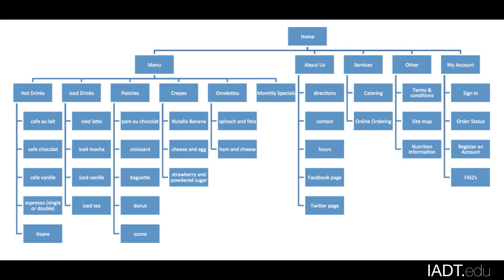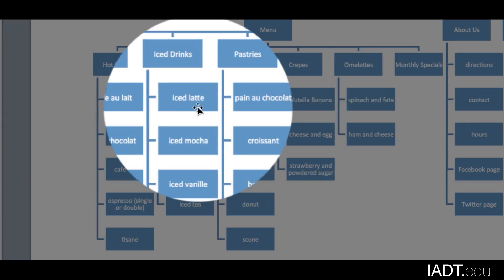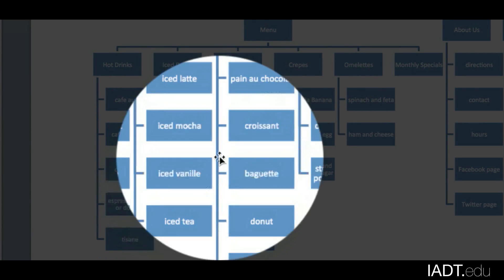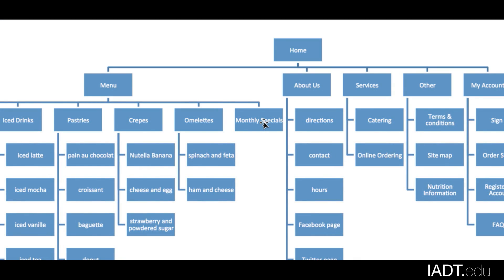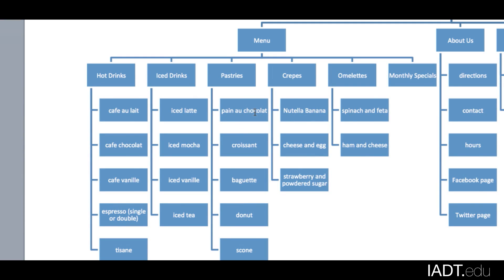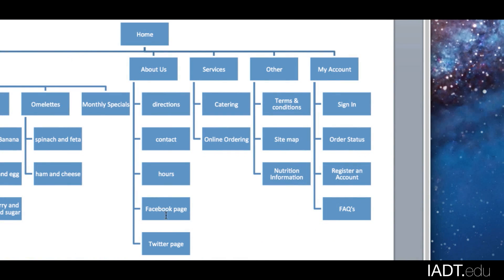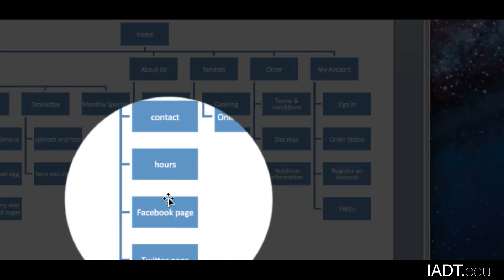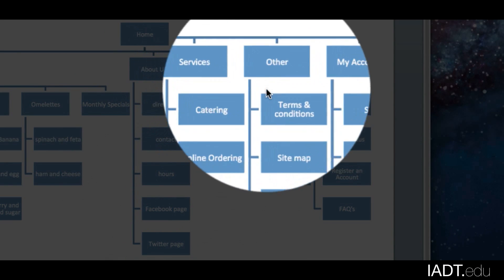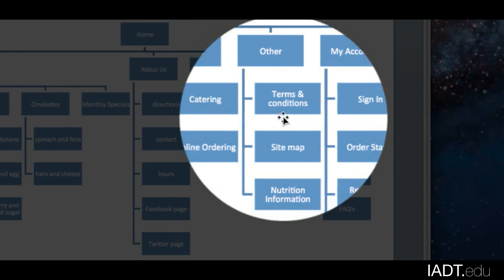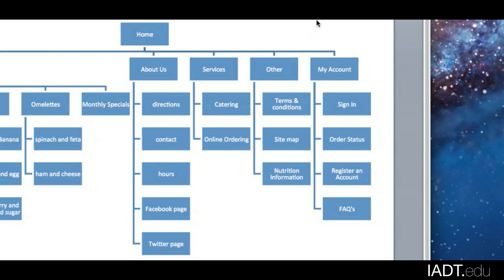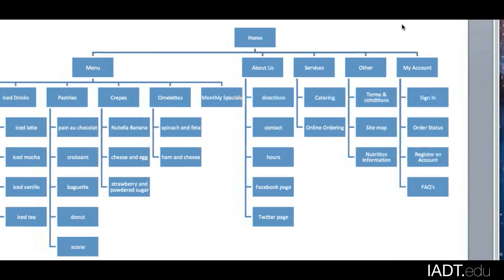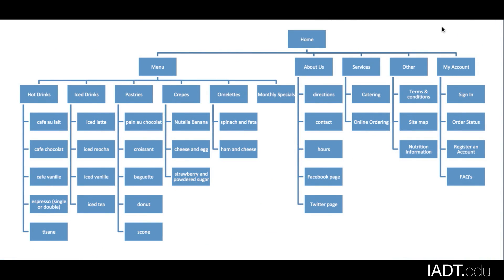This is the final version of my flowchart. I've developed all my pages — all the different iced drinks, pastries, crêpes, and omelets on the menu. I can develop monthly specials later, but I've got my main menu created. For About Us, I have all the things from the idea box. Catering and online ordering are under Services; Nutrition Info, Sitemap, and Terms and Conditions are under Other; and all the options are under My Account. Similar to the idea box, you can keep developing this until you feel all the relevant pages are represented. This shows you the relationship of all the pages within the site and also gives you an idea of how big the project is.